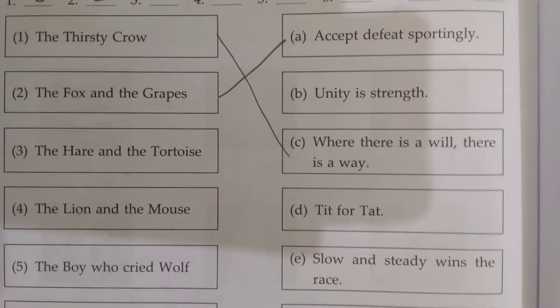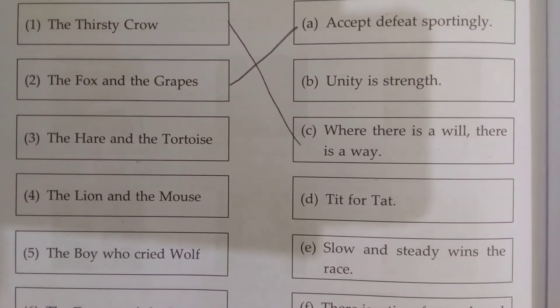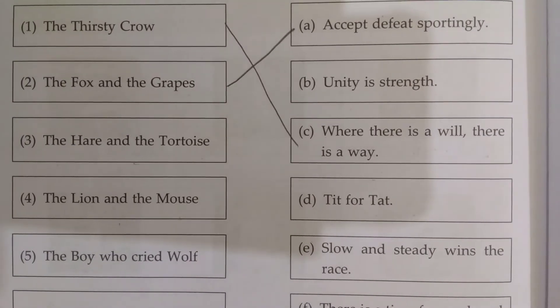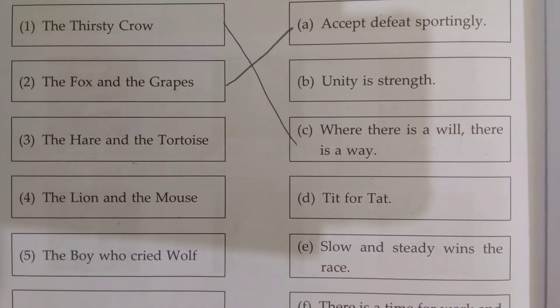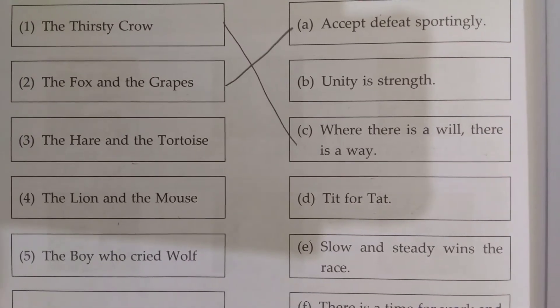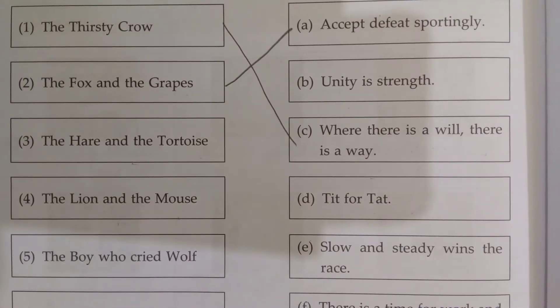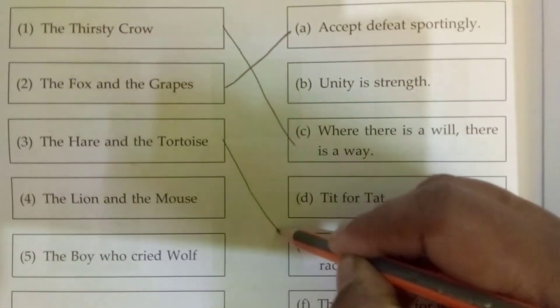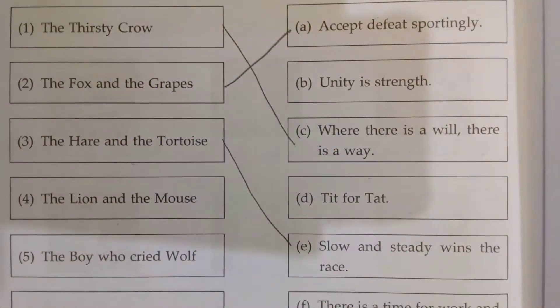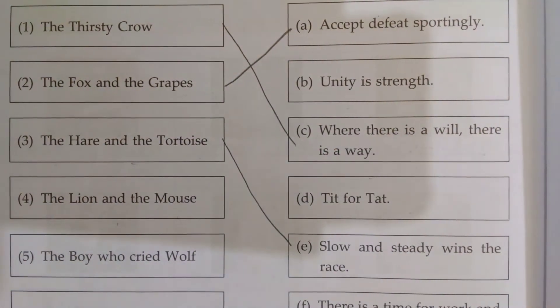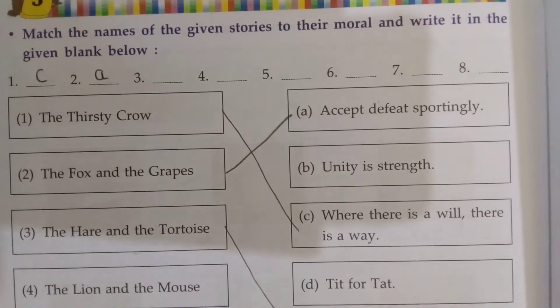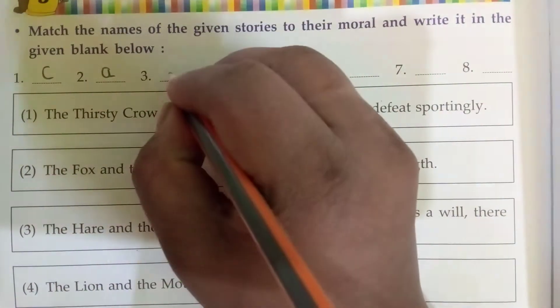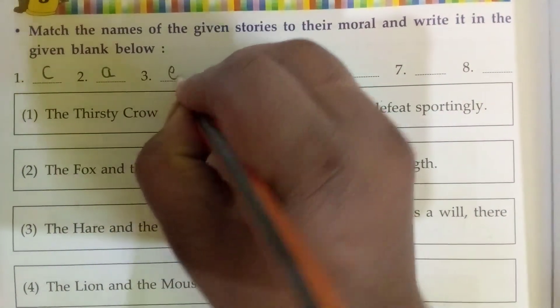Next, The Hare and the Tortoise — the moral is 'Slow and steady wins the race.' For the third one, you will write E.